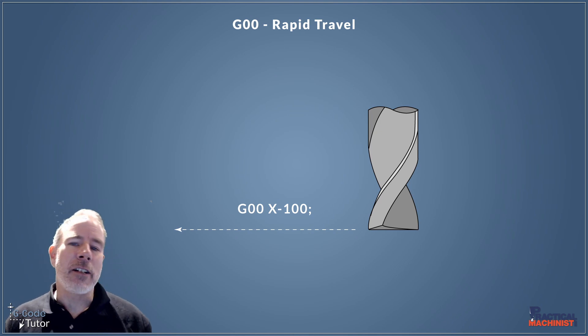So G-00 is used for rapid travel. This moves the machine as fast as it possibly can go between point A and point B. Now this is a straight line move. So if we were going to move X-100mm in this example here, we would just state G-00 X-100 and we would rapid as fast as we could to the left of the machine by 100mm in X.